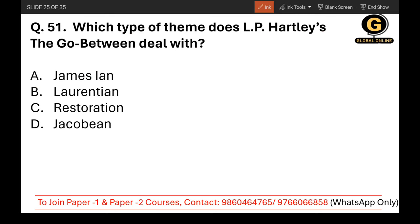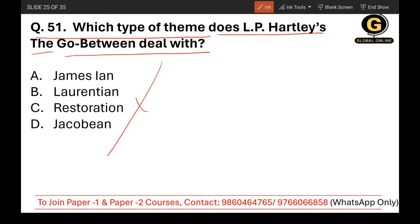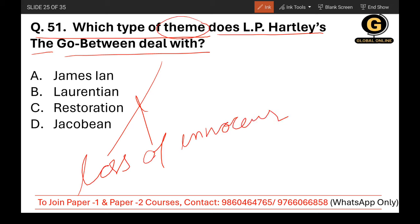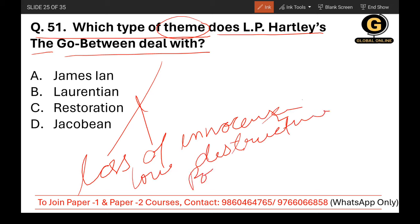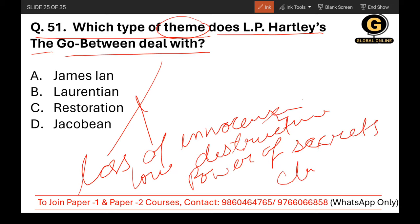Question 51: Which type of theme does L.P. Hartley's The Go-Between deal with? This question was dropped by the examiner. The themes include loss of innocence, love, the destructive power of secrets, and class differences.